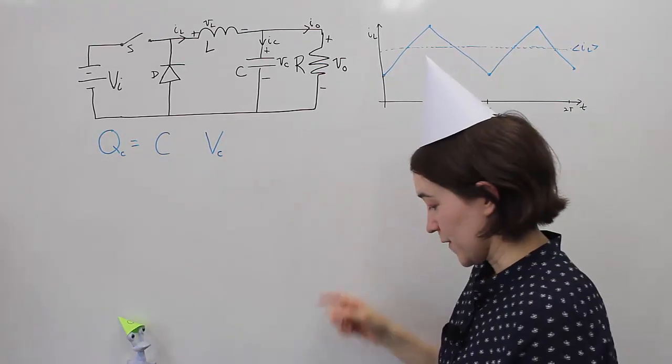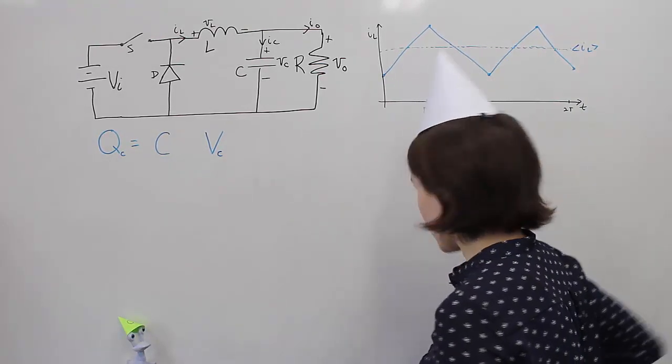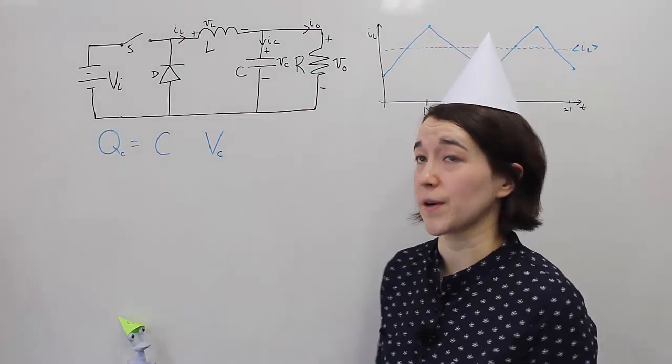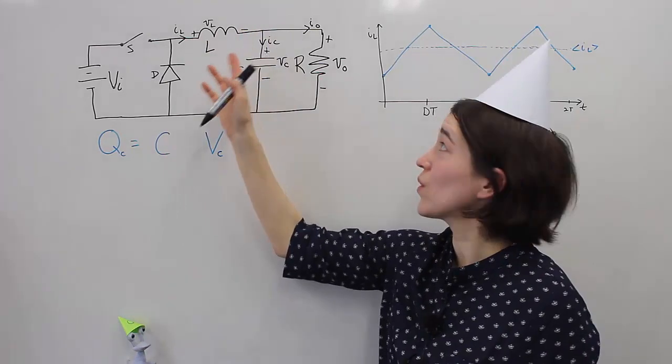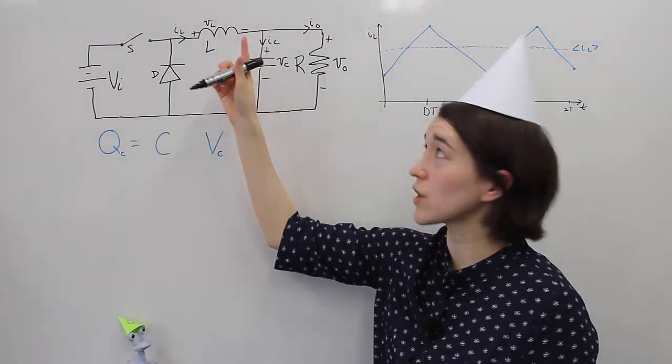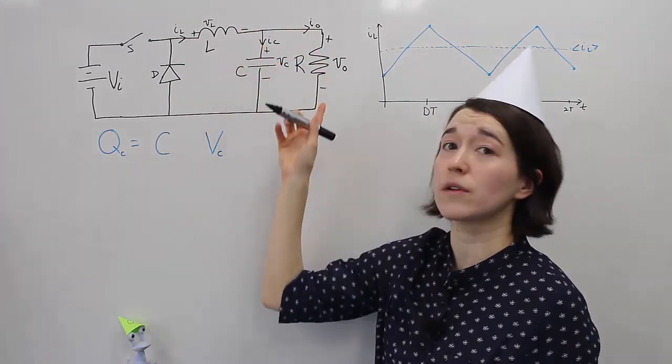So here we have our buck converter and we are going to look at the output current. Remember by looking at this node, we have current coming in from the inductor and we have current going out to the load.